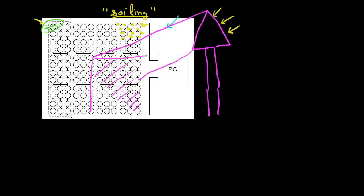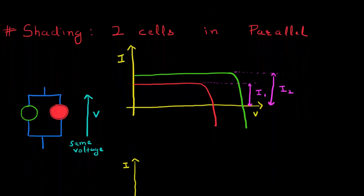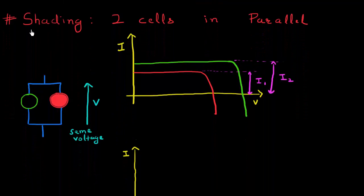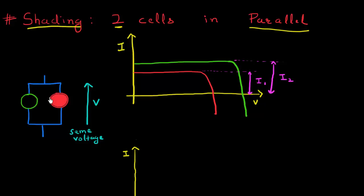So before we get to that, let's start with some basics and understand how shading affects two cells which are connected in parallel. What I'm showing over here are these two cells connected in parallel. Represented in green is my good cell, which has a well-behaved IV characteristic like this of a typical solar cell. I'll denote this as my good IV characteristics.